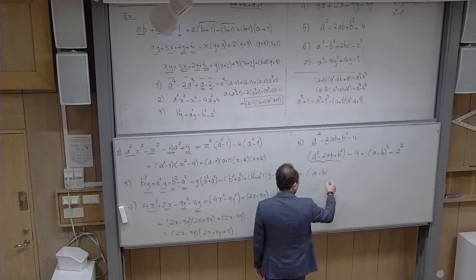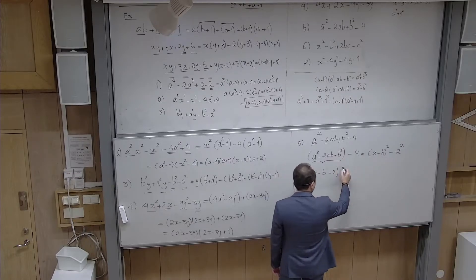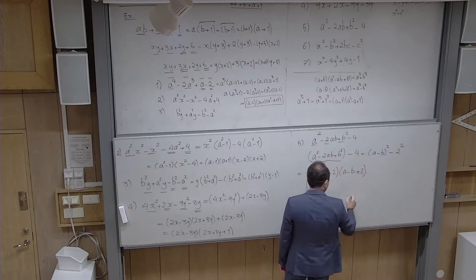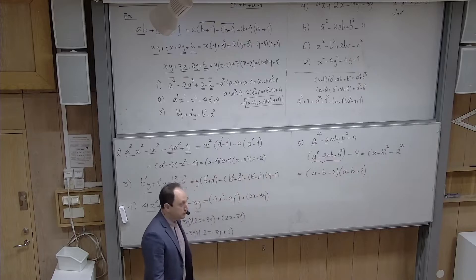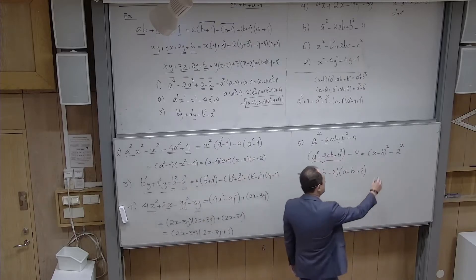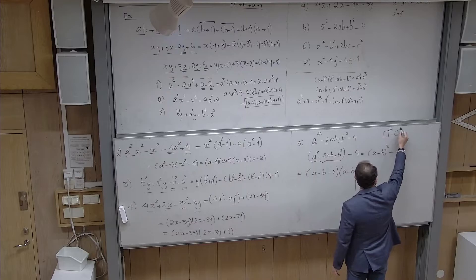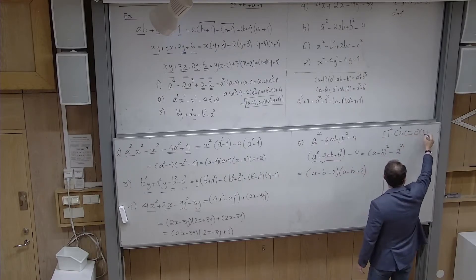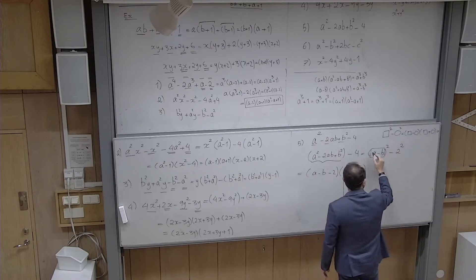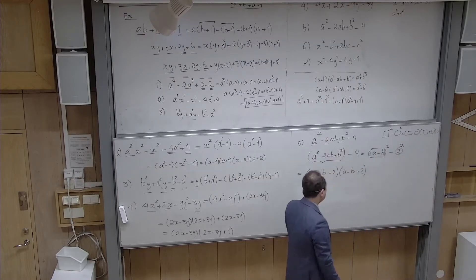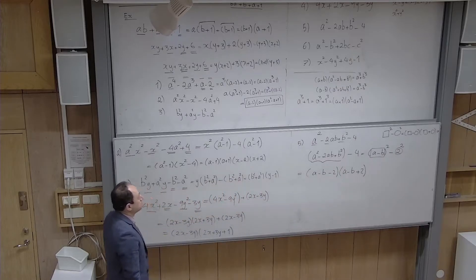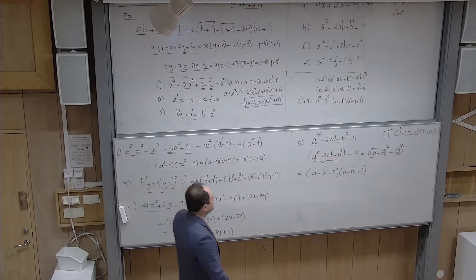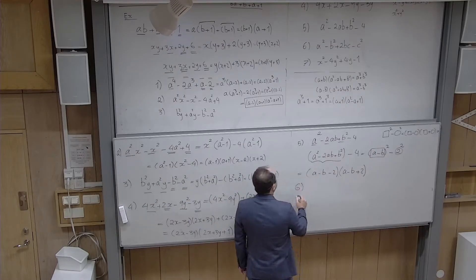Now for the optional exercise on cubic identities. Consider 64 + 27x³. Can this be factorized? Yes — 64 = 4³ and 27x³ = (3x)³, so this is the sum of two complete cubes. Using the formula a³ + b³ = (a + b)(a² − ab + b²) with a = 4 and b = 3x: it factors as (4 + 3x)(16 − 12x + 9x²).